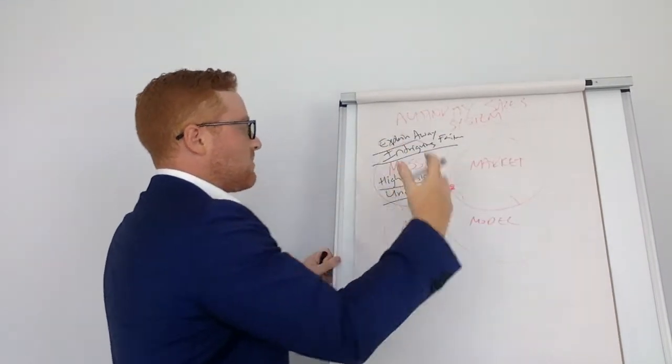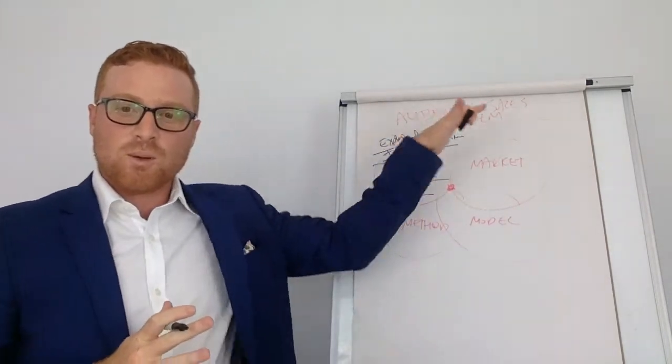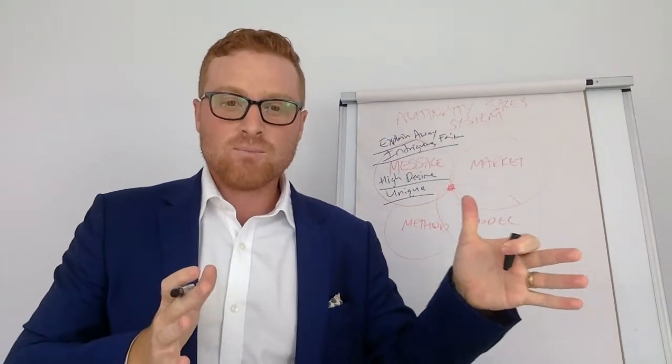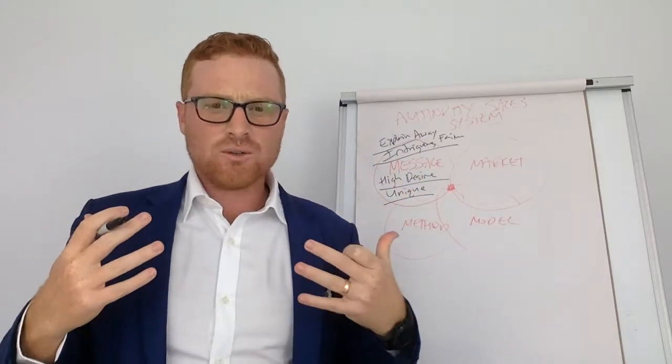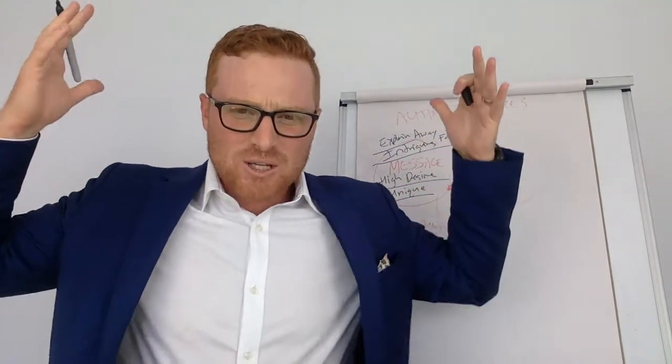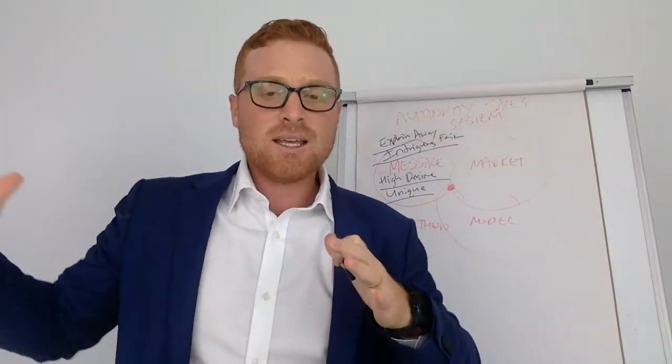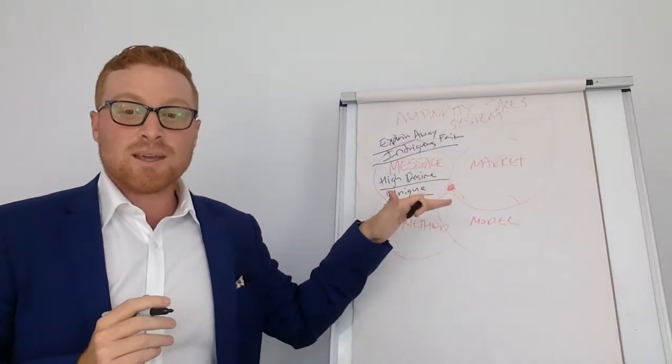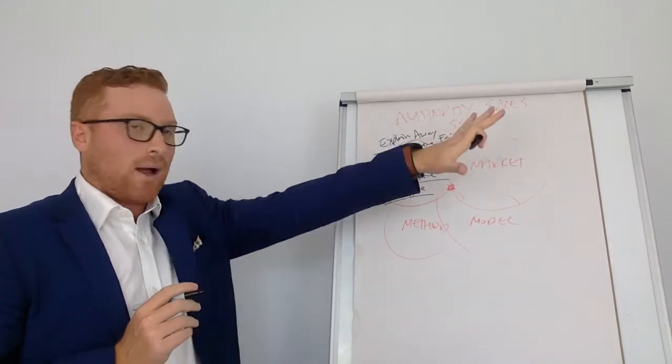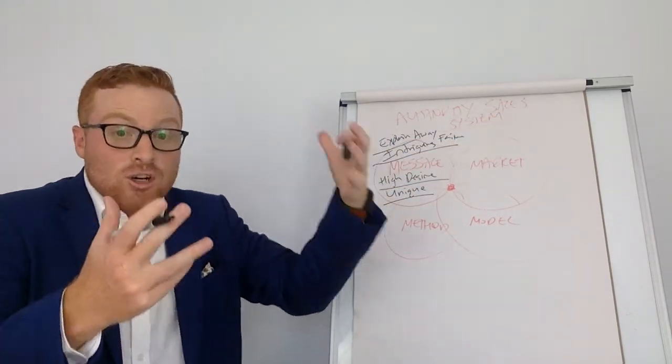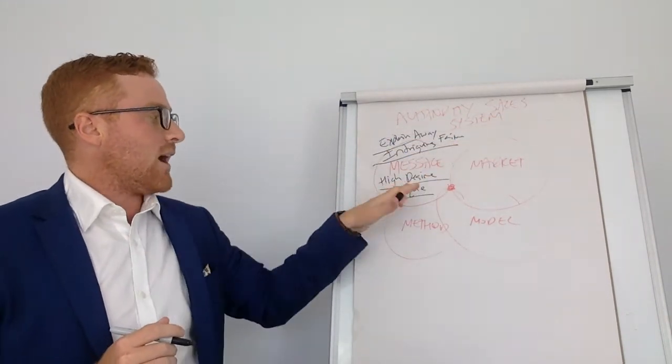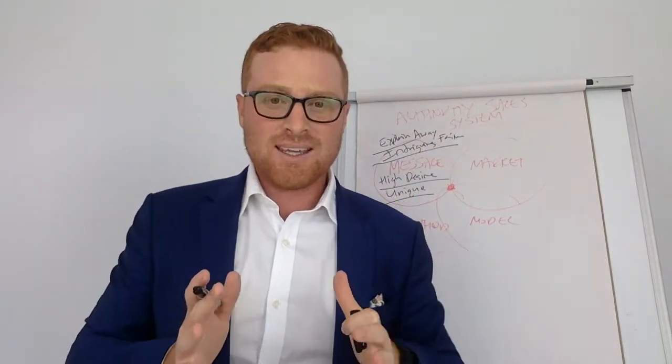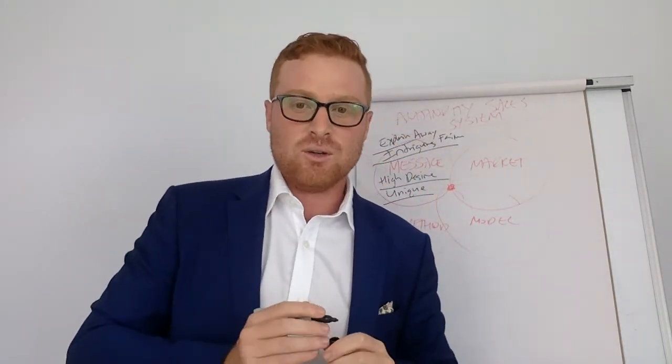It must explain away their failure. See, the truth is, if you become an authority, you're going to have sales come to you. The biggest reason why sales haven't come to you in the past is because people aren't seeing you as an authority. So you need to make sure that you get a message that explains away why they failed, that's intriguing, that is high desire, and it is unique.